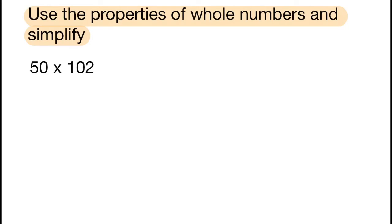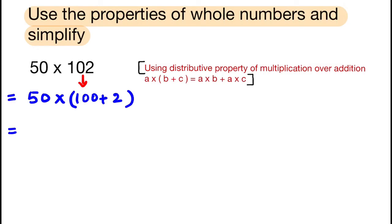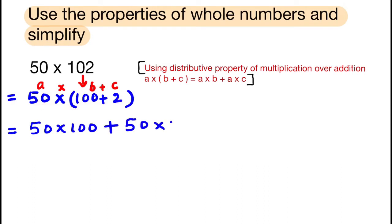Use the properties of whole numbers and simplify. First question: 50 × 102. Using the distributive property, a × (b + c) = a × b + a × c. 50 × 102 = 50 × (100 + 2) = 50 × 100 + 50 × 2.